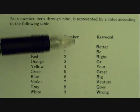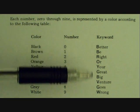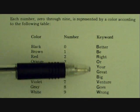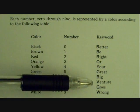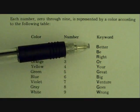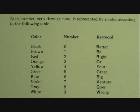There are various ways to remember this. Here's a little rhyme: 'Better be right or your great big venture goes wrong' — representing 0 through 9.